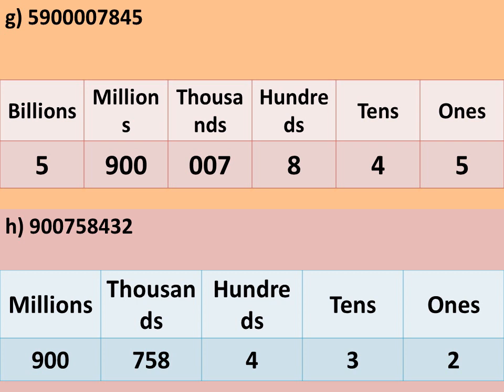Next we have number h: 900,758,432. Ones is 2, tens is 3, hundreds is 4, thousands is 758, millions is 900. In the international system, each place value group is separated by commas in groups of three from the right.